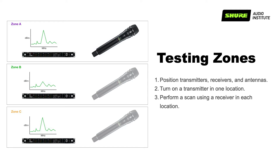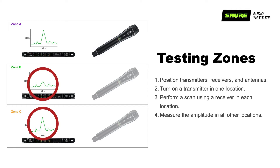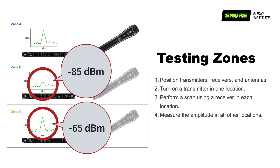Select at least one receiver from each performance area and run a spectrum scan using the Frequency Plot tool. Then measure the received signal of the operating transmitter in each of the scans taken and make note of these values.